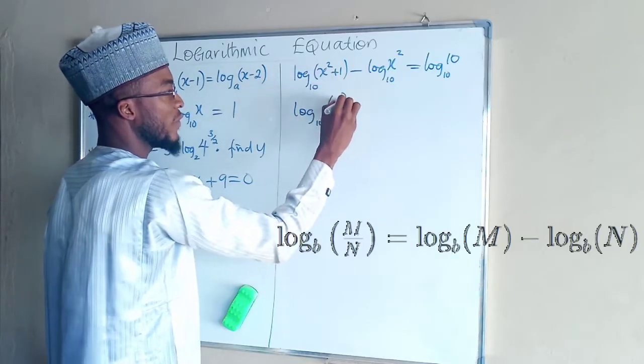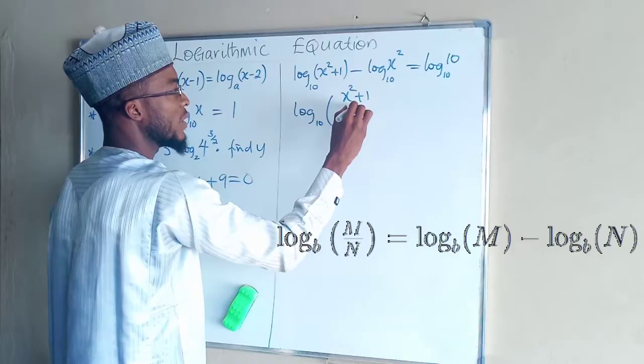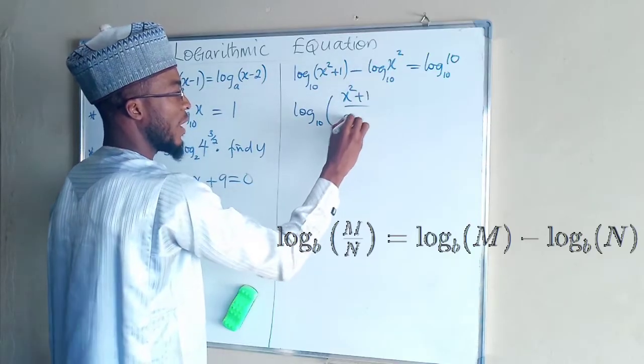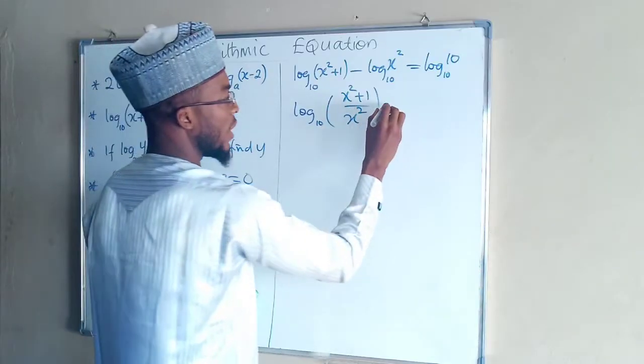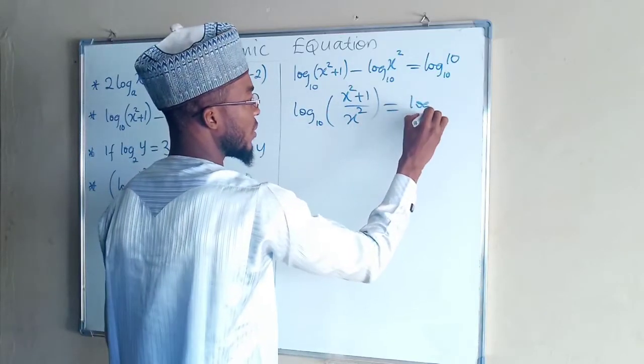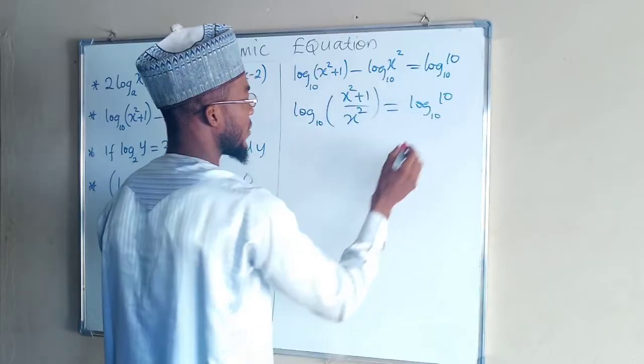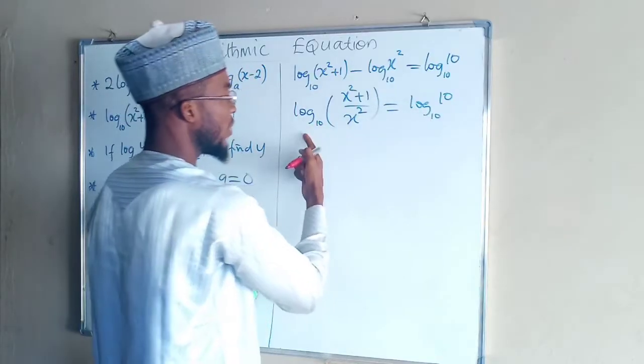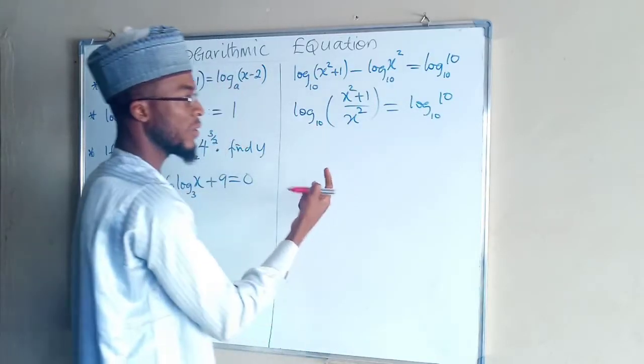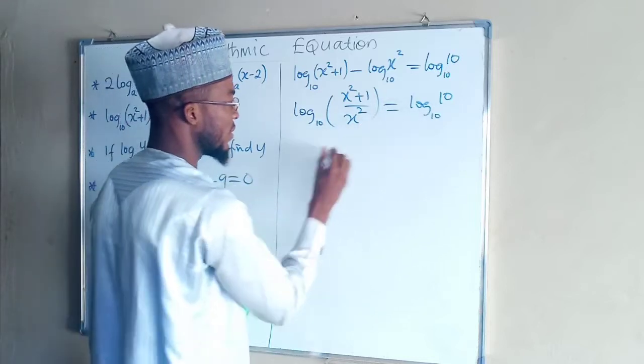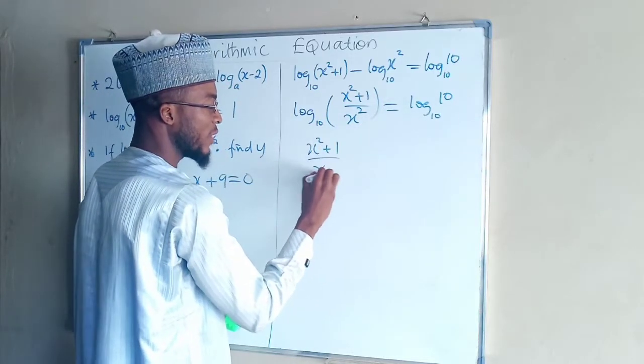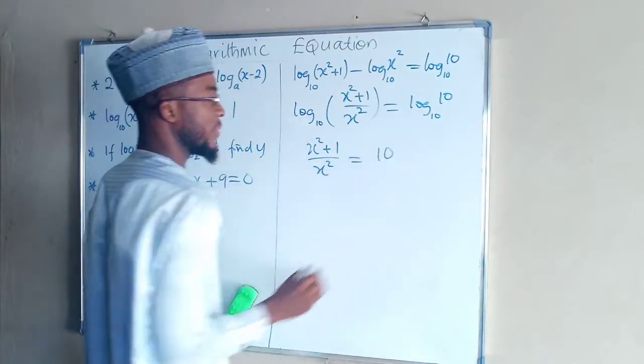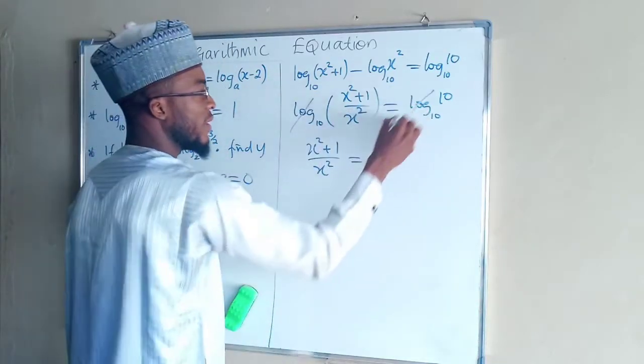So you have log, then here you have x squared plus 1 divided by x squared. If you have subtraction then you divide. And this equals log 10 base 10. On each side we have log to the base 10, so it means this equals x squared plus 1 and x squared equals 10. Because this cancels this.